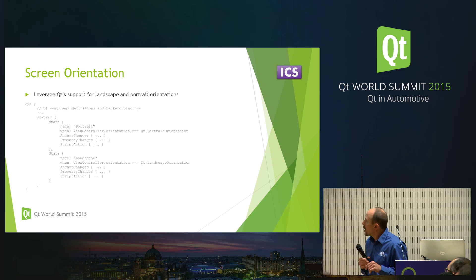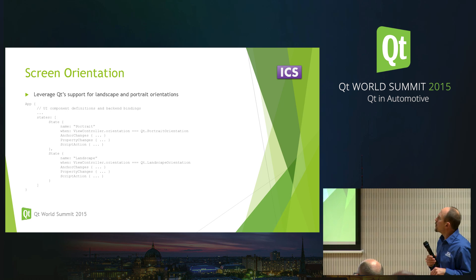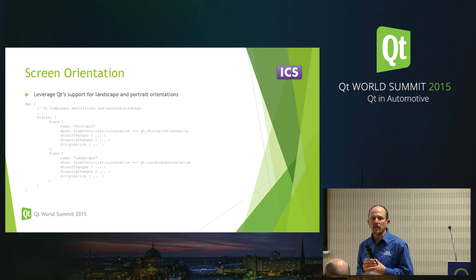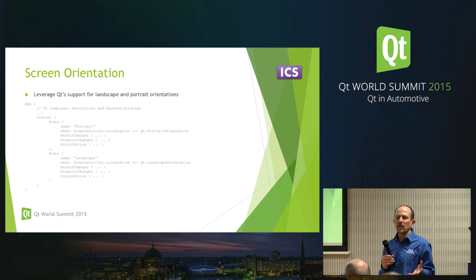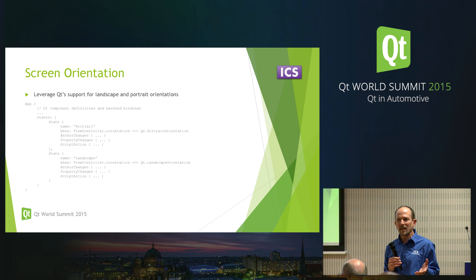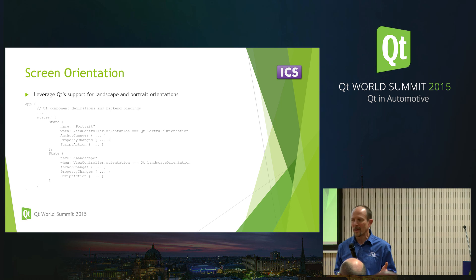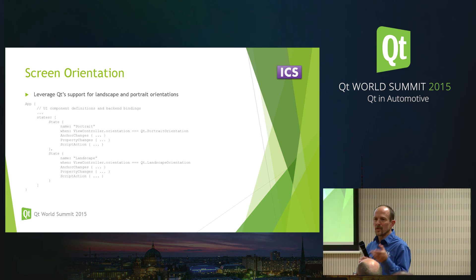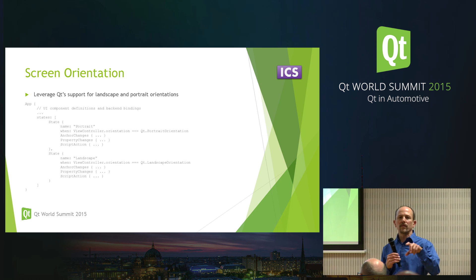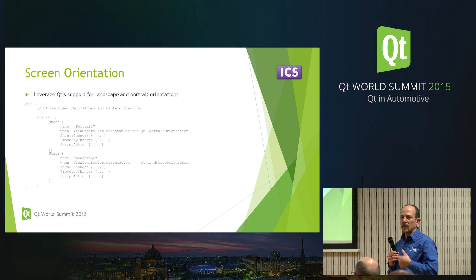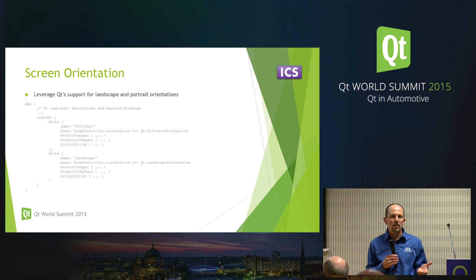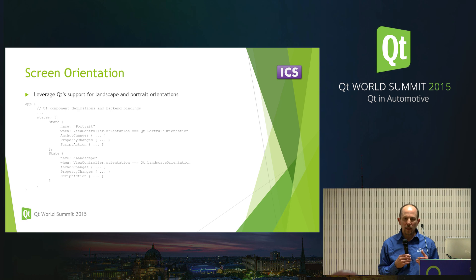For screen orientation, we use the screen orientation support that's built into Qt. Most vehicles aren't going to have a screen that changes orientation. However, a manufacturer may have different models with different screen orientations. Using this capability built into the infrastructure, we can support different layouts very easily.